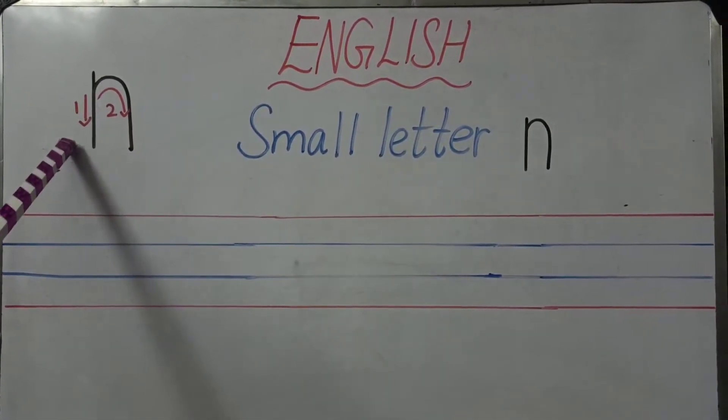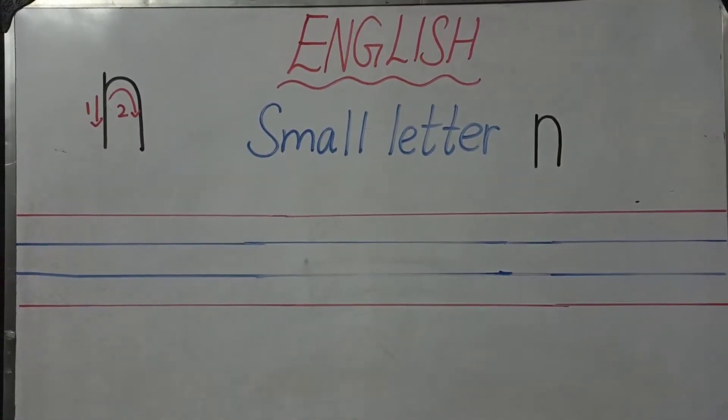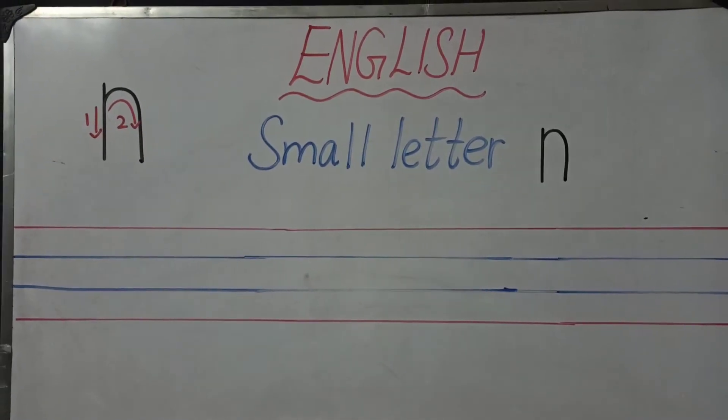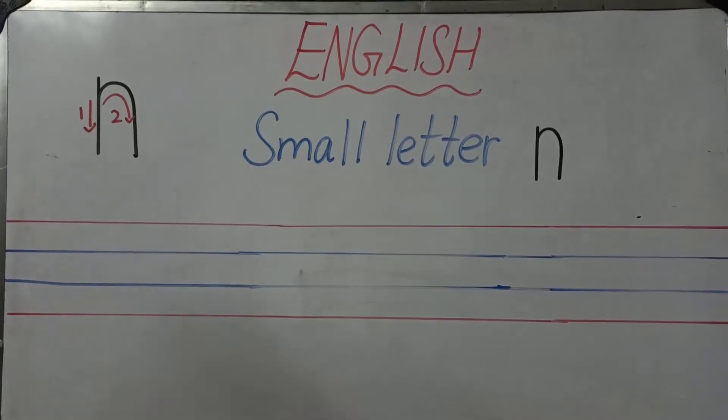Number one as a standing line, number two as an inverted U curve. So small letter N we are going to use only blue lines. We are not going to touch the red line. Now let's see how to write.